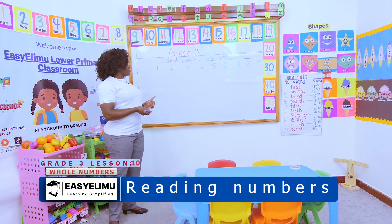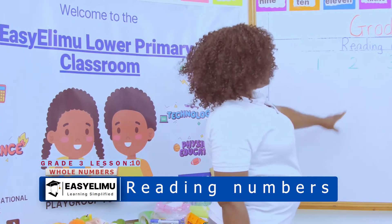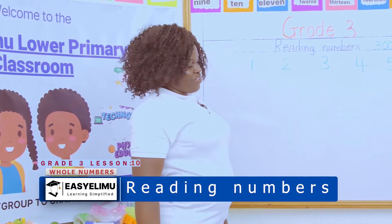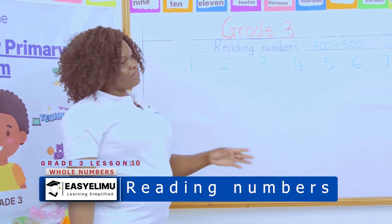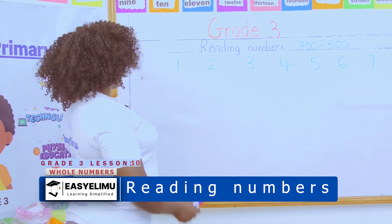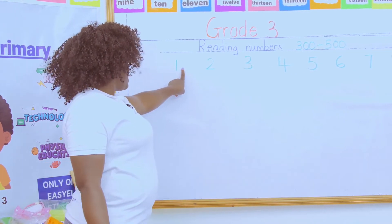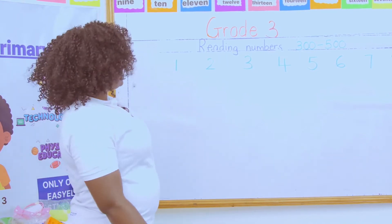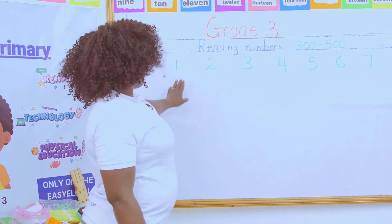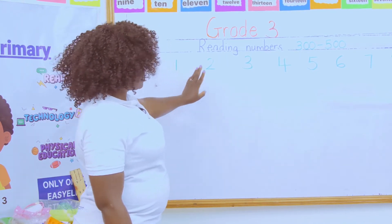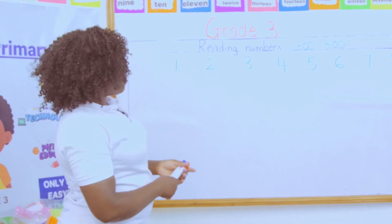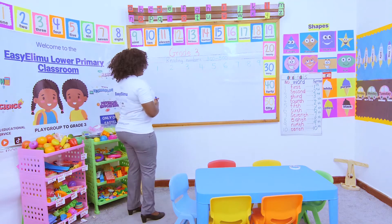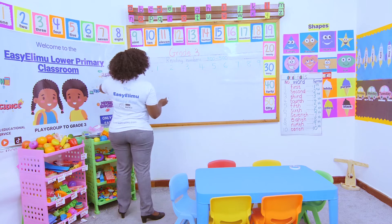Still on reading numbers. Now we are reading numbers 300 to 500. What is our rule? We are maintaining the rule — use the main numbers. And what are the main numbers? The main numbers are 1, 2, 3, 4, 5, 6, 7, 8, and 9.